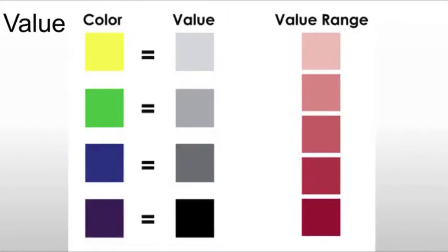Then we have value. Now, value is how light or dark a color is. For example, yellow is a very light value, and violet is very dark. And this becomes important because when we look at a painting, we want to find a good mix.